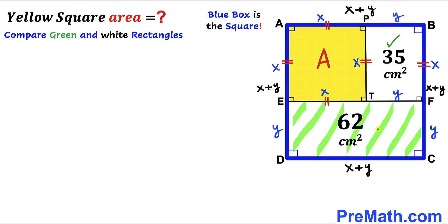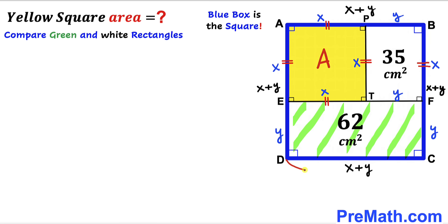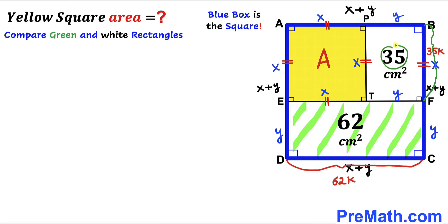Now let's compare the green rectangle EFCD and the white rectangle PBFT. The width of the green rectangle is y, and the width of the white rectangle is also y — their widths are identical. So there must be a relationship between their lengths. I'll label the length of the green rectangle as 62k and the length of the white rectangle as 35k, using a constant k, since their areas are 62 and 35 cm² respectively.